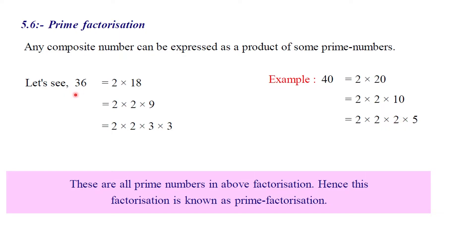For the composite number 36, we can find it as 2, then 2 into 1, then 2 into 2 into 1.